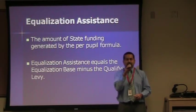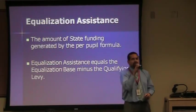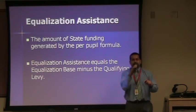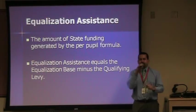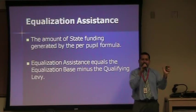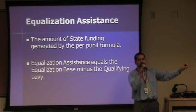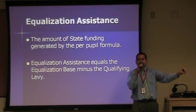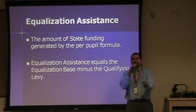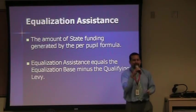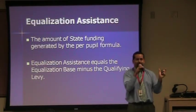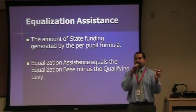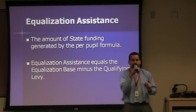Equalization assistance is how much you're getting from the state. The base is the total amount; equalization assistance specifies how much comes from the state. The rest comes from local property taxes — that line on your tax bill that says Kyrene School District is where the remainder comes from.